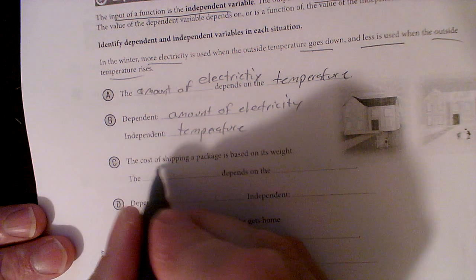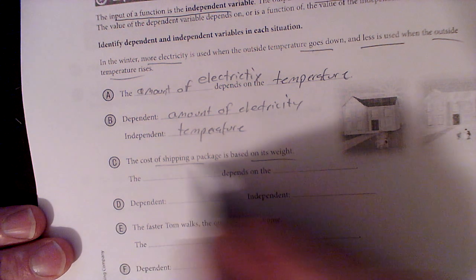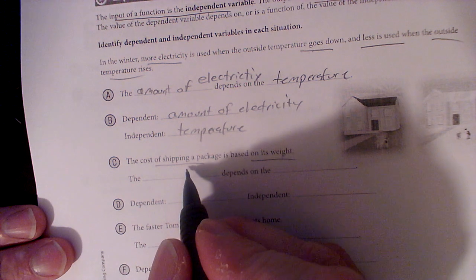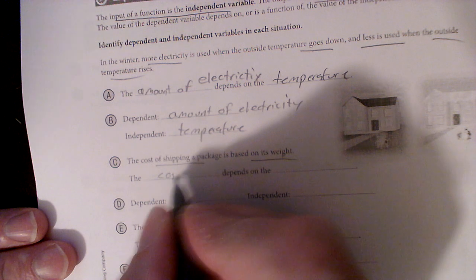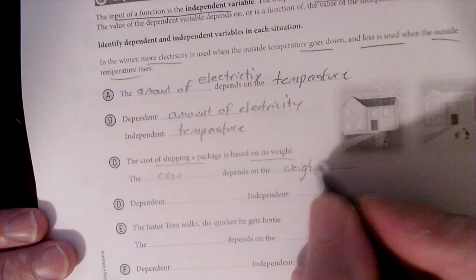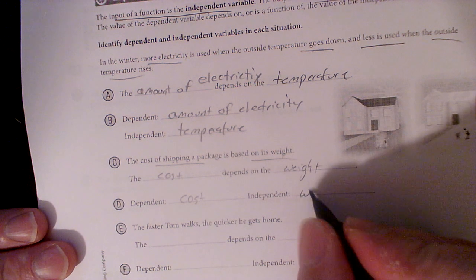The cost of shipping a package is based on weight. Paying more money doesn't make the package weigh more, but if the package weighs more, it causes you to pay more money. The cost depends on weight. Dependent is cost, and it depends on weight.